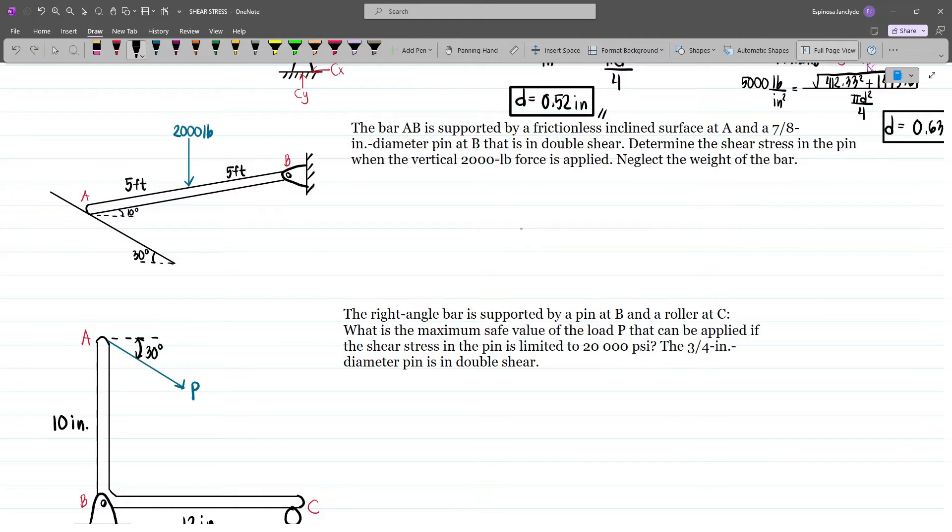We have to determine the shear stress in the pin when the vertical 2000 pound force is applied, and we are to neglect the weight of the bar. That means we'll only consider this force.